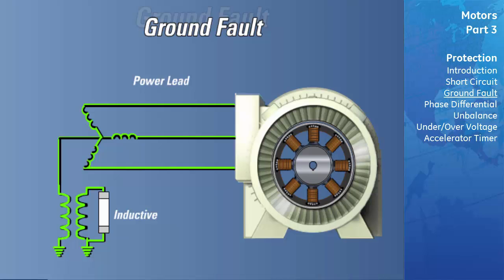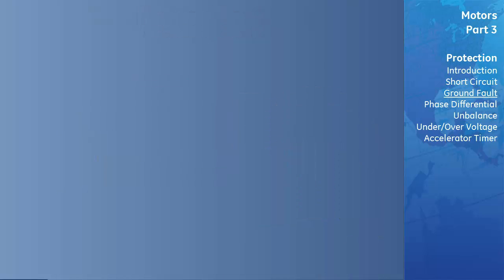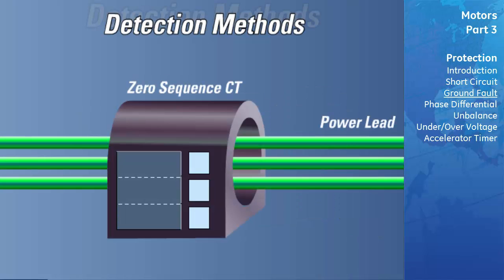There are several ways by which a ground fault can be detected. The most desirable method is to use the zero sequence CT approach. This is considered the best method of ground fault detection due to its sensitivity and inherent noise immunity. All phase conductors are passed through the window of the same CT, referred to as the zero sequence CT. Under normal circumstances, the three-phase currents will sum to zero, resulting in an output of zero from the zero sequence CT secondary. If one of the motor's phases were to short to ground, the sum of the phase currents would no longer equal zero, causing a current to flow in the secondary of the zero sequence CT. This current would be detected by the relay as a ground fault.